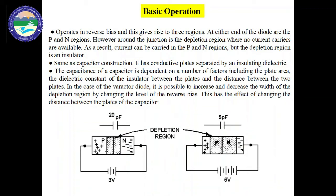The varactor diode always operates in reverse bias condition. When a reverse bias voltage is applied, electrons from the N region and holes from the P region move away from the junction. As a result, the width of the depletion region increases and the capacitance decreases. However, when the applied reverse bias voltage is very low, the capacitance will be very large. Capacitance is inversely proportional to the width of the depletion region and directly proportional to the surface area of the P and N regions.